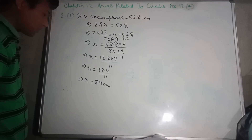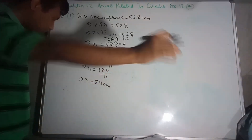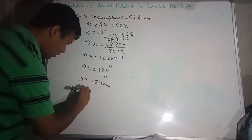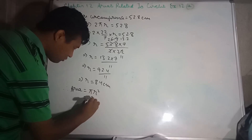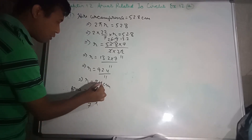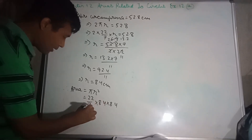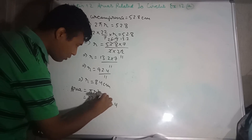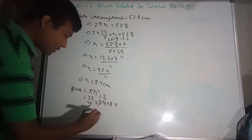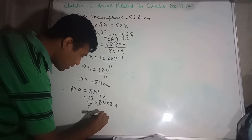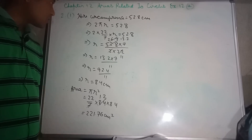We can multiply: 92.4 divided by 11. This implies R equals 92.4 divided by 11. This implies R equals 8.4. So the radius R is 8.4. Now, area equals π R squared = 22/7 × 8.4 × 8.4. Simplifying: 7 into 8.4 divided by 1.2. So 22 × 1.2 × 8.4 = 221.76 cm². This is the area of the circle: 221.76 cm².